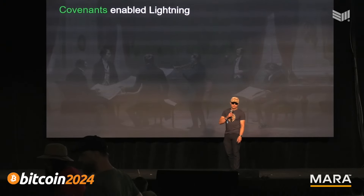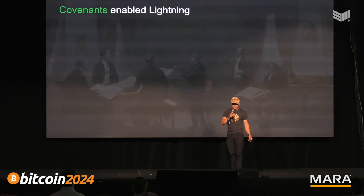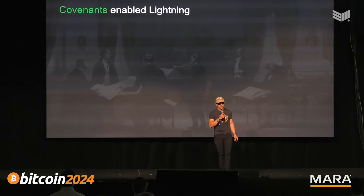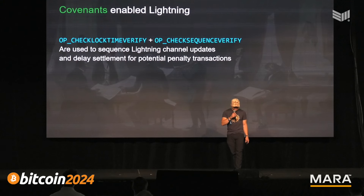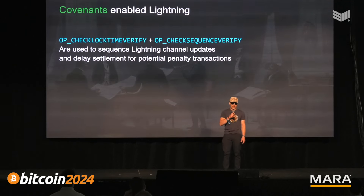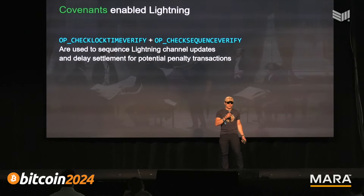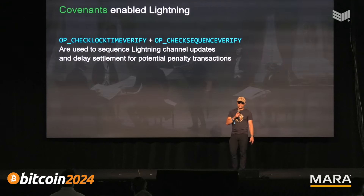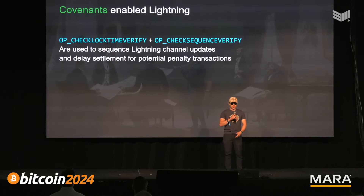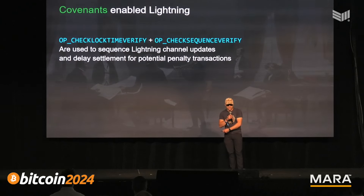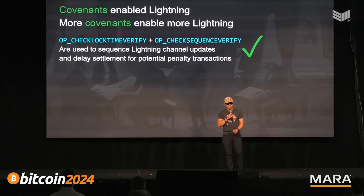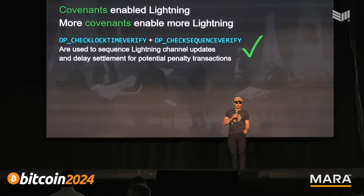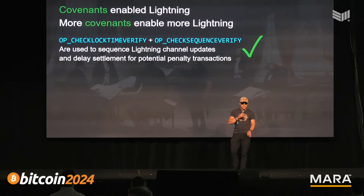We're talking about covenant proposals, but covenants are already in Bitcoin — covenants enable the lightning network. Those two covenants are called CHECKLOCKTIMEVERIFY and CHECKSEQUENCEVERIFY, and respectively they're used to sequence updates to lightning channels and to delay settlement of lightning channels for penalty purposes. Without covenants, we would not have the lightning network as it is today.